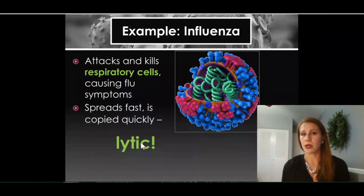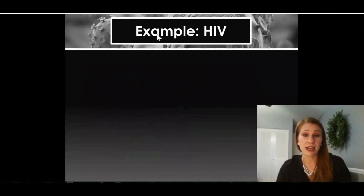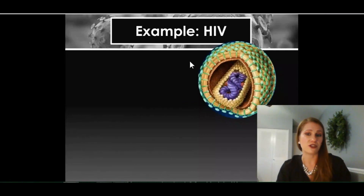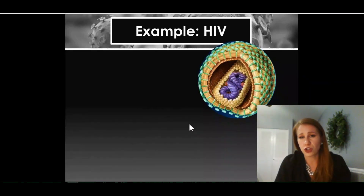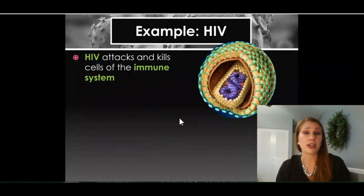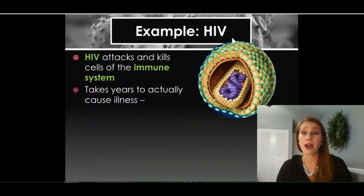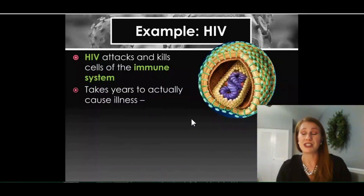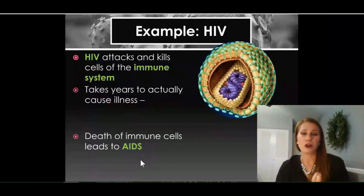On the other hand, HIV is not a quick-acting virus. Here's a picture of HIV — it has DNA or RNA on the inside, a capsid, and an envelope with glycoproteins on the outside. Same structure, just looks a little different. It attacks and kills cells of the immune system — those glycoproteins work best on immune system cells. This one takes years to cause illness. For a long time, people that had HIV didn't know anything was wrong because they wouldn't feel sick or show any symptoms. But as soon as they started showing symptoms, they would die very quickly — and that's because the HIV would start turning lytic, which is essentially AIDS.